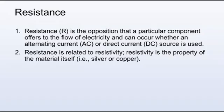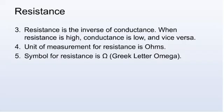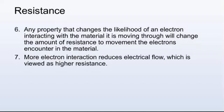Resistance is the opposition that a particular component offers to the flow of electricity, and can occur whether an alternating current, AC, or direct current, DC, source is used. Resistance is related to resistivity. Resistivity is the property of the material itself, for example, silver or copper. Resistance is the inverse of conductance. When resistance is high, conductance is low, and vice versa. Unit of measurement for resistance is ohms. Symbol for resistance is the Greek letter omega. Any property that changes the likelihood of an electron interacting with the material it is moving through will change the amount of resistance to movement the electrons encounter in the material. More electron interaction reduces electrical flow, which is viewed as higher resistance.